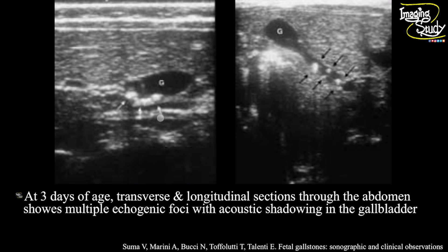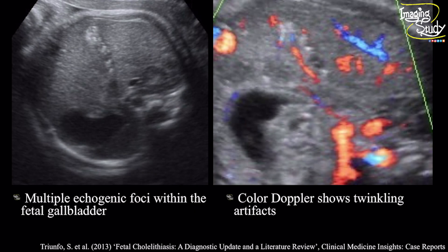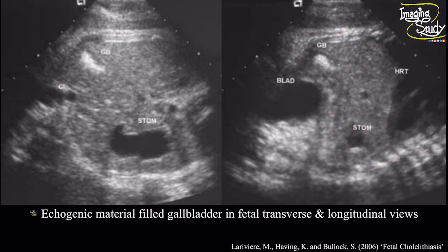Most of these stones will get resolved within two to three months, so make sure to give a follow-up. Here again, another case showing the hyper-echogenic foci within the fetal gallbladder lumen, and on color Doppler you can see some twinkling artifact from these hyper-echogenic structures indicating cholelithiasis. Another case shows the hyper-echogenic material-filled gallbladder in transverse and longitudinal section of the fetal abdomen indicating cholelithiasis.